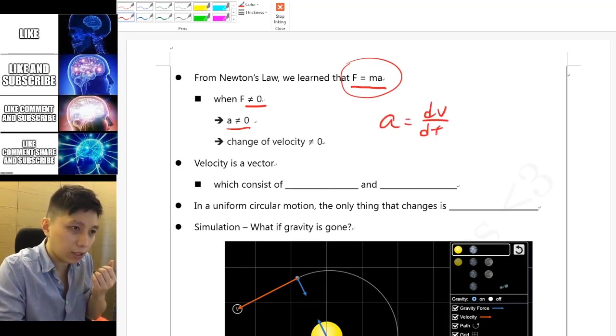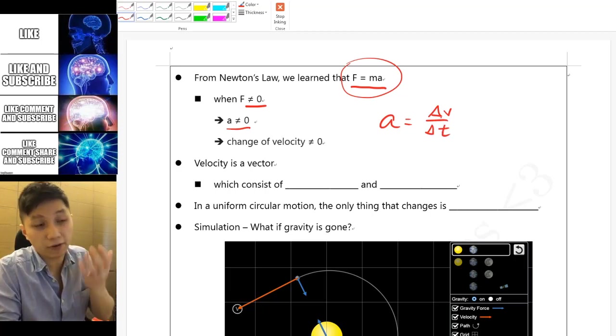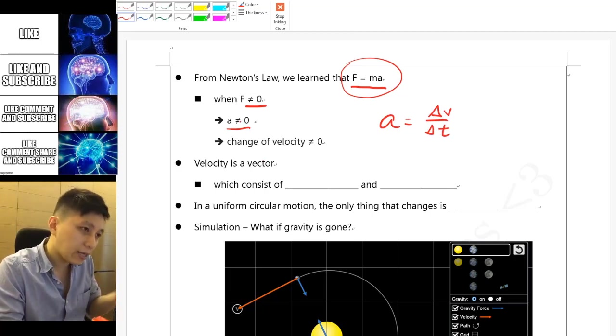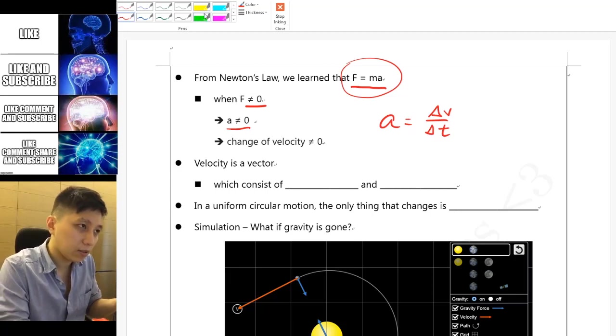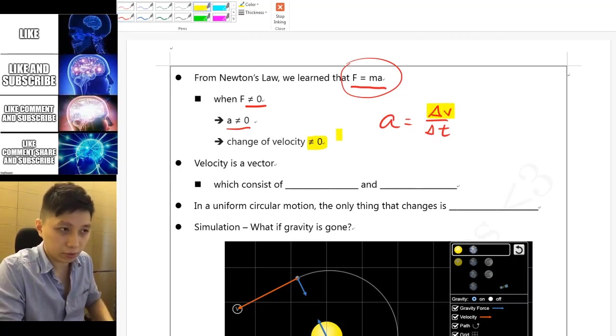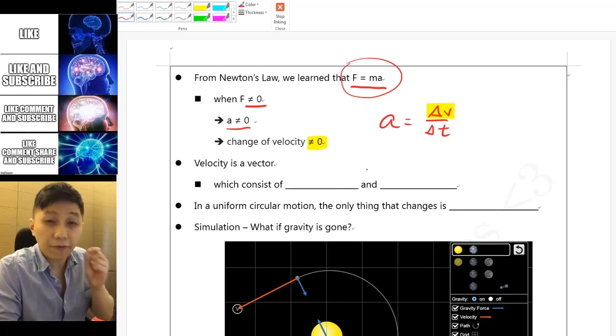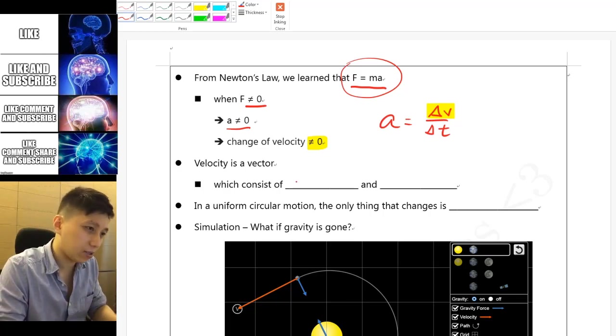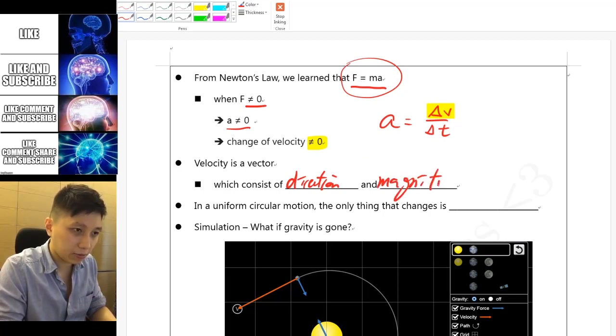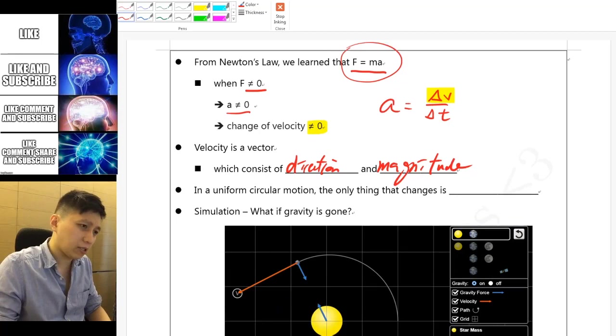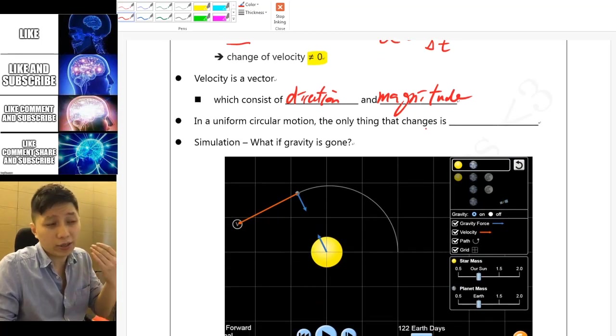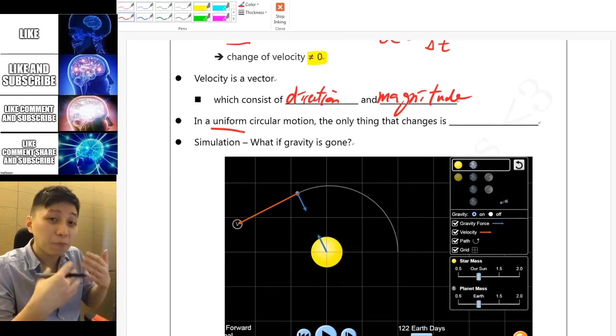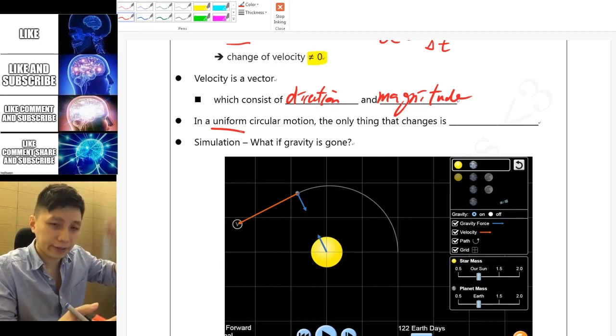And since a equals to dv over dt using differentiation, or if you don't know about this, delta v over delta t, change of velocity over change of time, then if a is non-zero then that means the delta v is also non-zero. And speaking of velocities of vector, it consists of direction and magnitude.